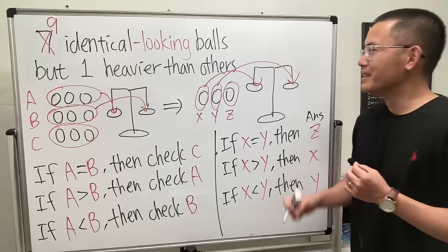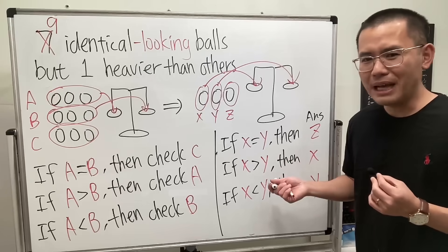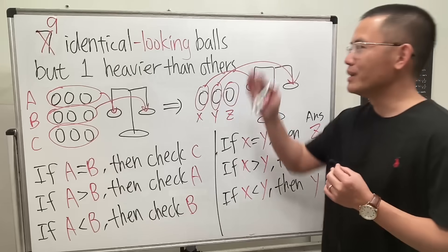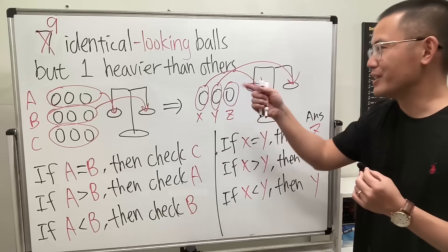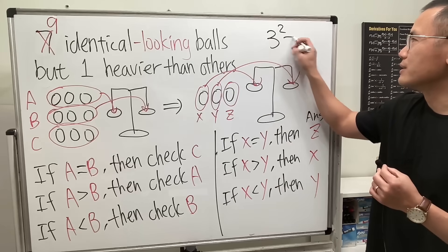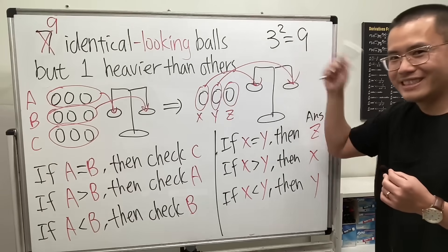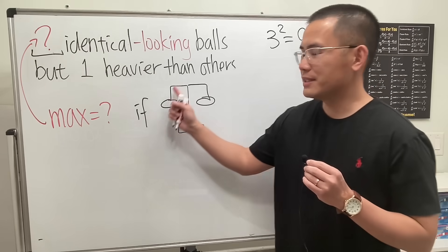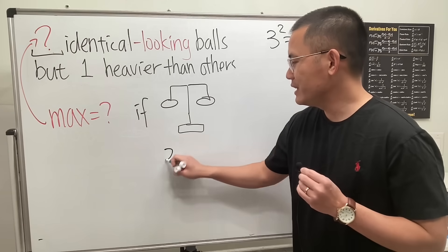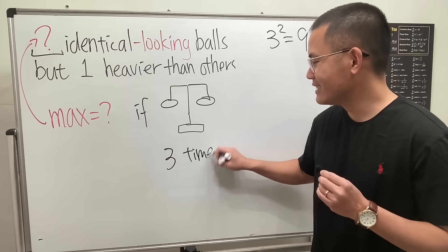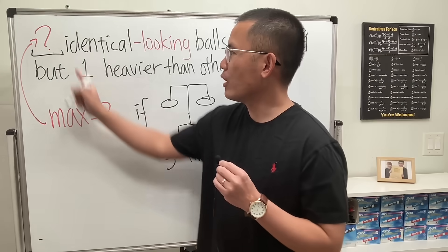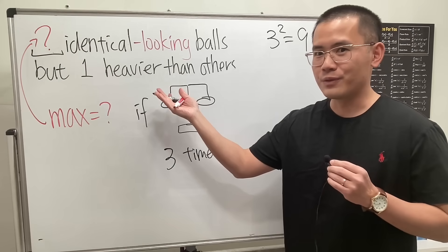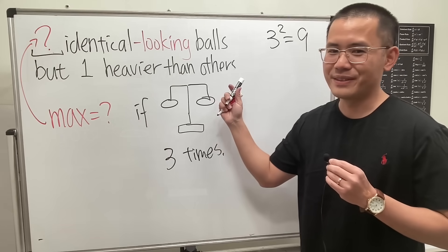Where's the math though? Why does this work? Three to the second power gives us nine. The math is 3^2 = 9. Now a quick question: what if I let you use the scale three times? What's the maximum number of identical balls with one heavier than the others? 3^3, right? Go ahead, figure it out.